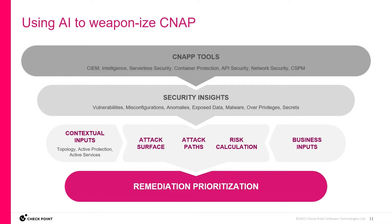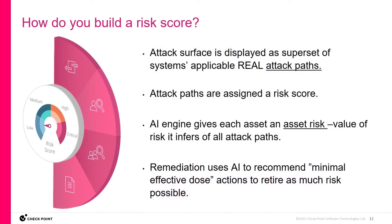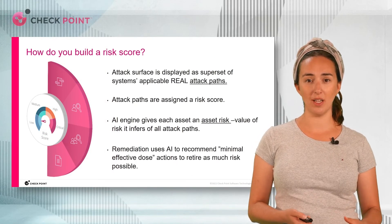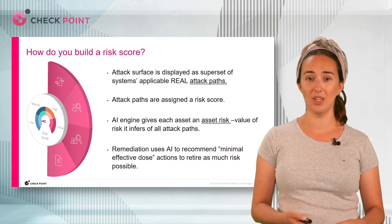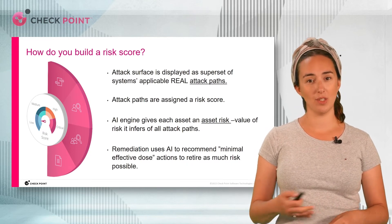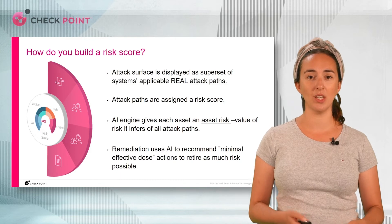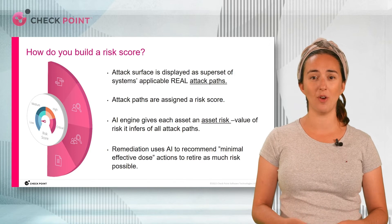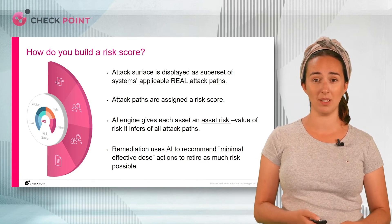Why is that useful? Because finally we're taking remediation decisions by considering the context of security risks. We properly understand the attack surface, assign each attack path a risk score, and the machine combines these with business value to provide each asset with an asset risk score too. Once the machine combines risk scores and business priorities, it can provide automated remediation prioritization where security resources are optimized and focused on the security risks which matter most to the business.